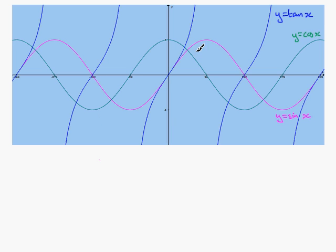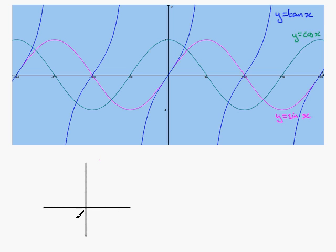What I'm going to show you is a way that we can summarise some important results relating to these graphs in what is often called a quadrant diagram. A quadrant diagram is a diagram where we draw a set of lines and have four regions. This first region is known as the first quadrant, going from 0 degrees to 90 degrees.